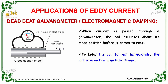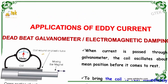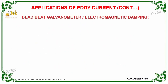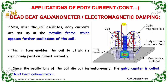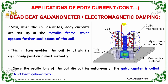To bring the coil back to rest immediately, the coil is wound on a metallic frame. When the coil oscillates, eddy current is set up in the metallic frame which opposes further oscillation of the coil, trying to stop it. This enables the coil to attain its equilibrium position almost instantly.